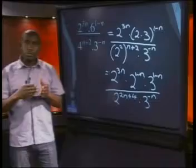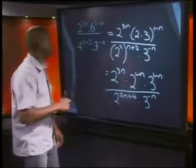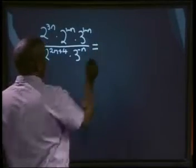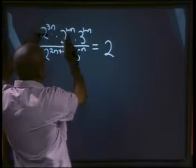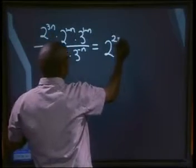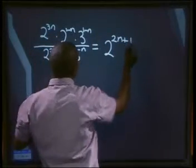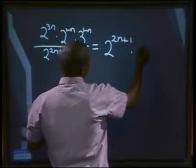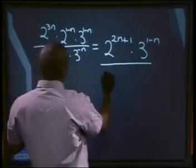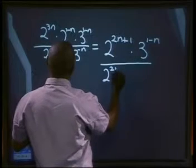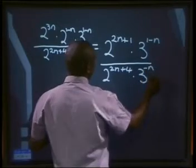Now that we've expanded the powers, the next step is to add the exponents. That will be equal to 2 to the power of 3n plus 1 minus n, which gives us 2n plus 1, multiplied by 3 to the power of 1 minus n, divided by 2 to the power of 2n plus 4, times 3 to the power of minus n.